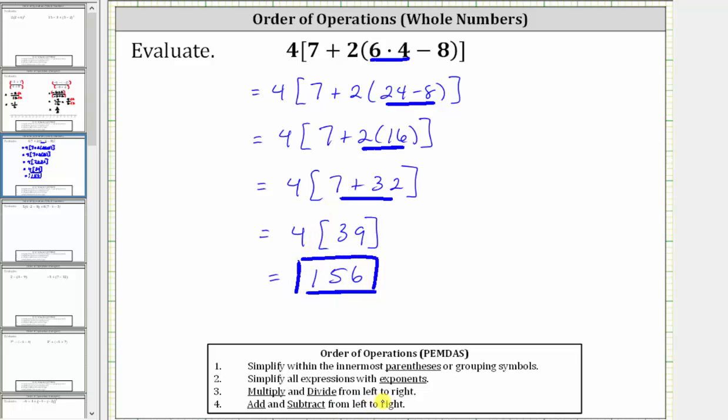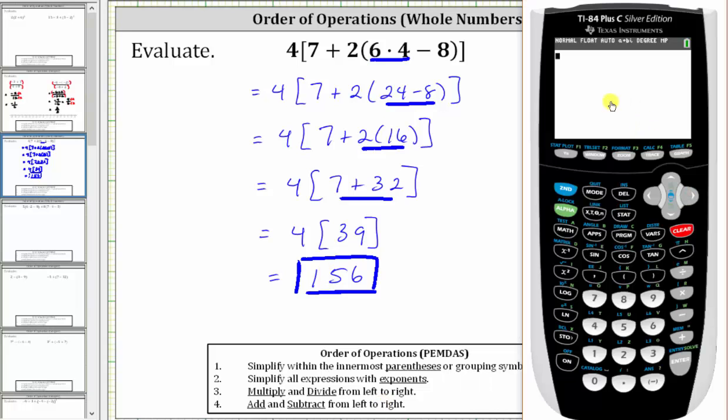Let's go ahead and verify this using a calculator. When entering the expression, the only difference is you will use parentheses instead of brackets. So we enter four, open parenthesis, seven plus two, open parenthesis, six times four minus eight, close parenthesis, close parenthesis, and enter, which does verify we did evaluate the expression correctly.